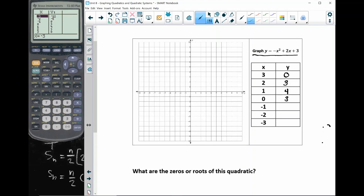Now when x equals 0, y equals 3. When x equals negative 1, I get a 0. When x equals negative 2, I get a negative 5. And when x equals negative 3, I get a negative 12.